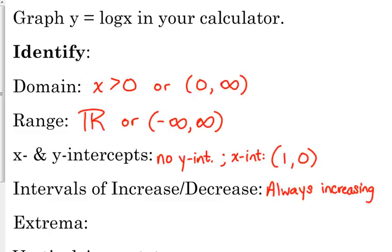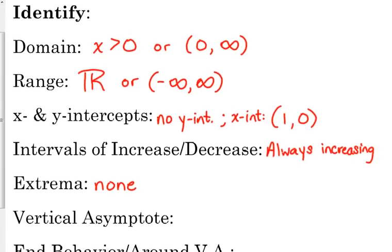We don't have any extrema, because extrema - maximums and minimums - occur when there's a change from increasing and decreasing. There's no change here, so we don't have any extrema, maximums or minimums.